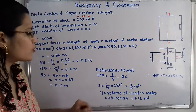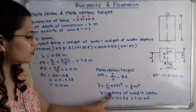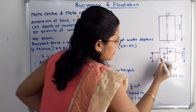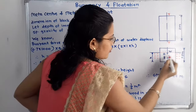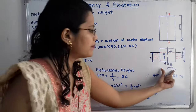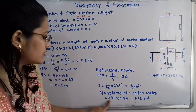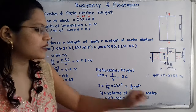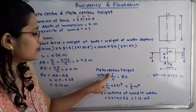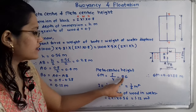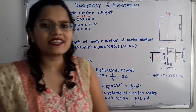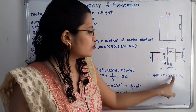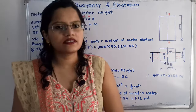V is the volume of the wooden block submerged in water: V = H × 1 × 2 = 0.56 × 2 × 1 = 1.12 m³. Substituting into the formula: GM = (1/6)/1.12 − 0.12 = 0.0288 m. Therefore, the metacentric height of the wooden block is 0.0288 m.